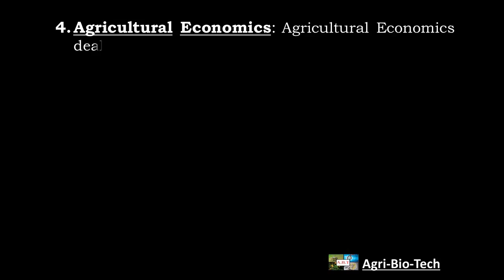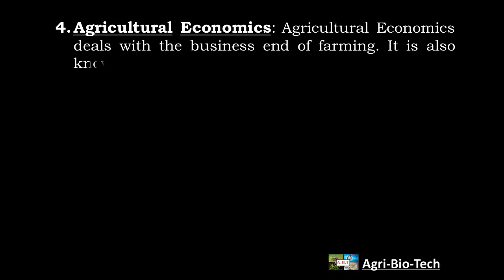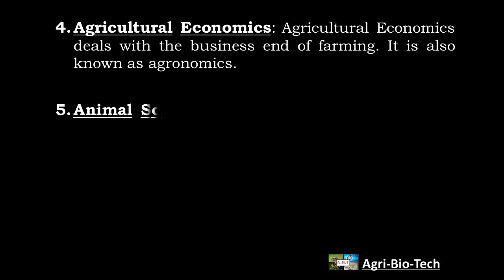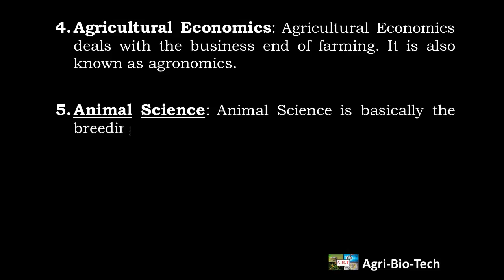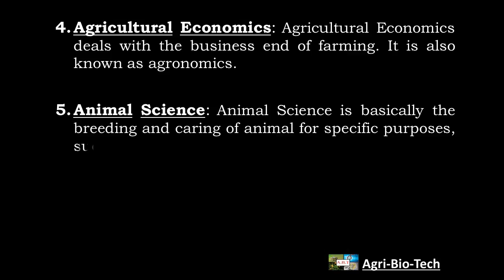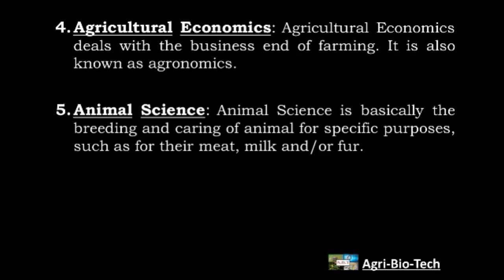Fourth one, Agricultural Economics deals with the business end of farming. Agricultural economics, or agronomics, is an applied field of economics concerned with the application of economic theory in optimizing the production and distribution of food and fiber. It is also known as agronomics. Fifth and last one is Animal Science, also called animal bioscience, described as studying the biology of animals that are under the control of humankind. Animal science is basically the breeding and caring of animals for specific purposes such as for their meat, milk, and fur.